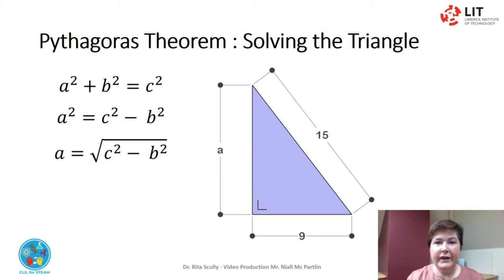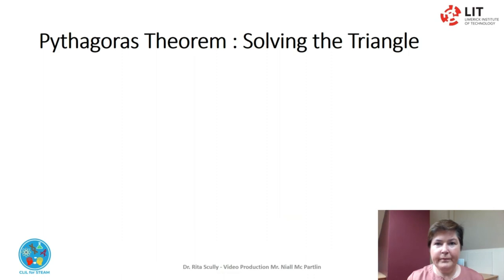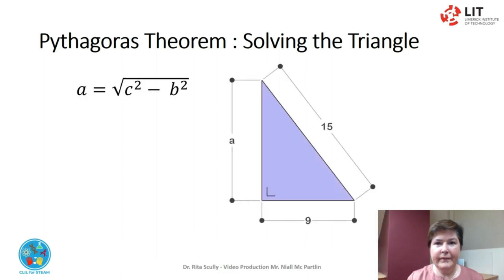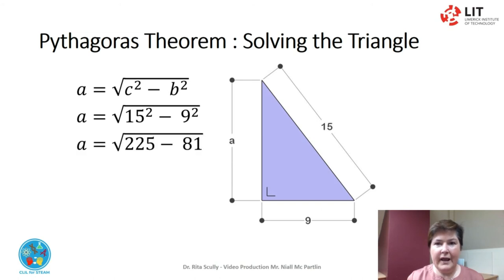Now we fill in the figures that we know. A equals the square root of C squared minus B squared. A equals the square root of 15 squared minus 9 squared. A equals the square root of 225 minus 81. A equals the square root of 144. A equals 12.